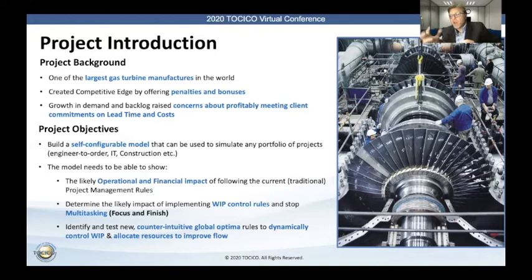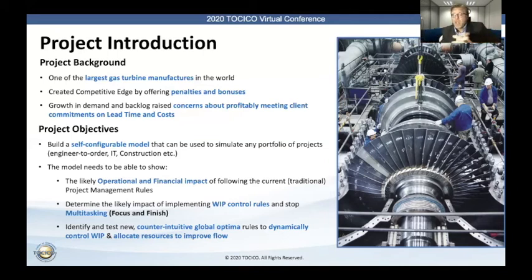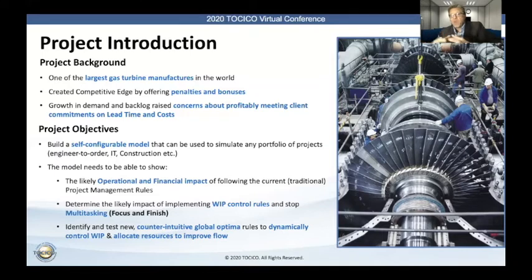Then we can test various rules. We can say: if you are making the typical mistakes we've identified in managing projects — both in making commitments, planning, execution, and improvement — we can then test what if we implemented specific critical chain project management rules that will help us to reduce or even avoid those mistakes.